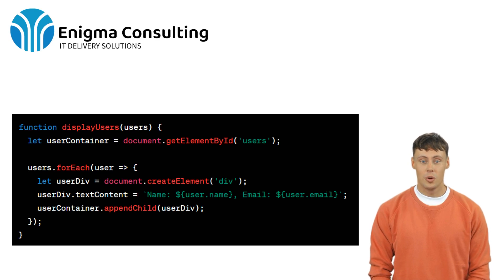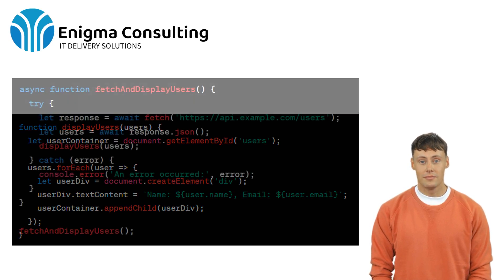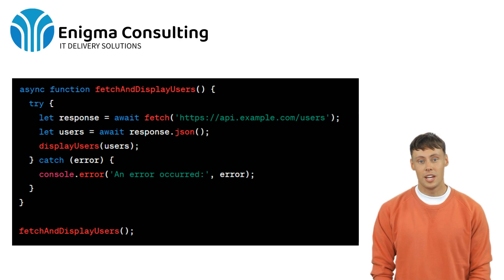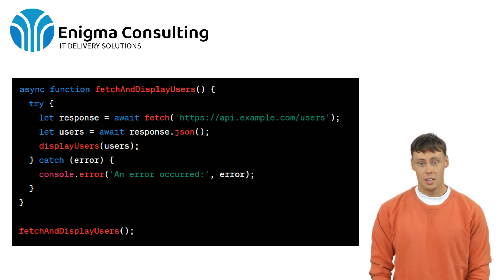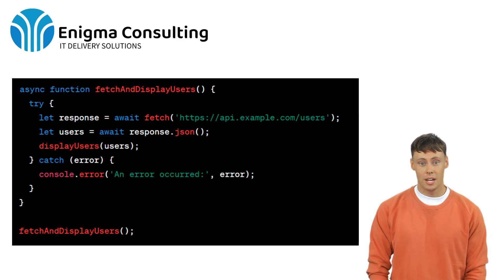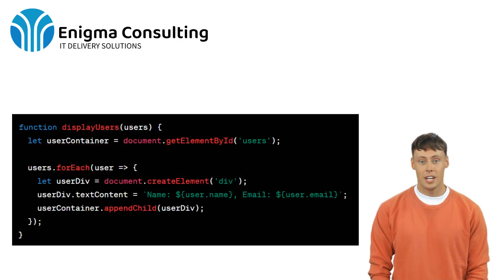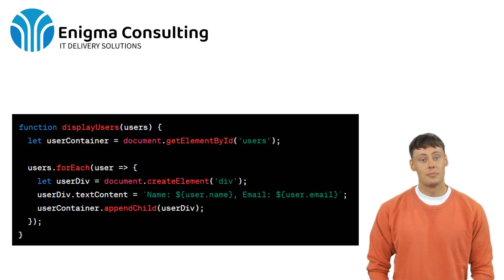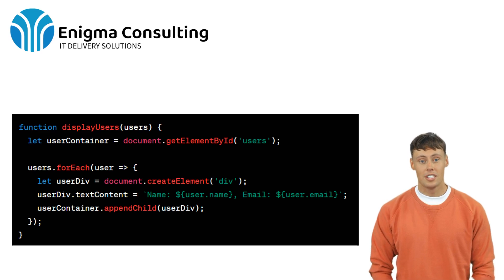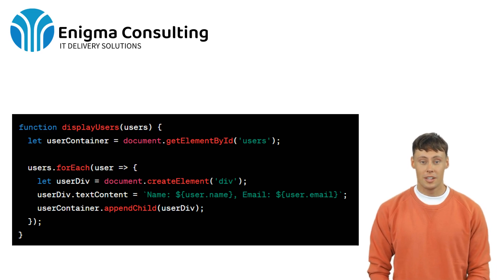Let's combine everything we've learned to fetch data from an API and display it on our web page. This code fetches users from the given API and calls the display users function to show them on the web page. By combining promises, async/await, the Fetch API, and DOM manipulation, you can create rich and interactive web experiences.